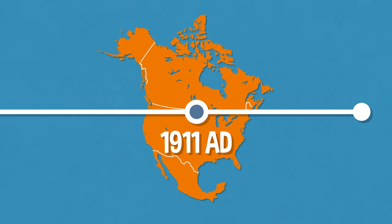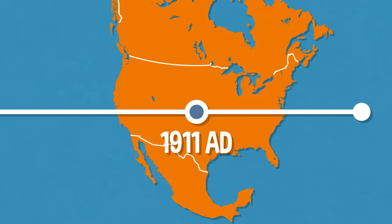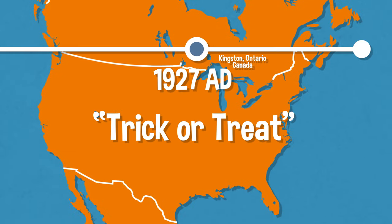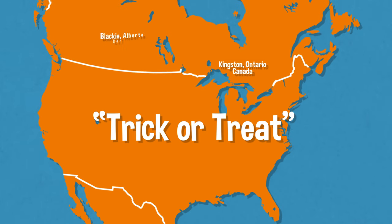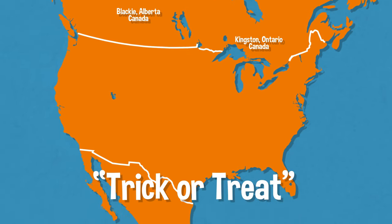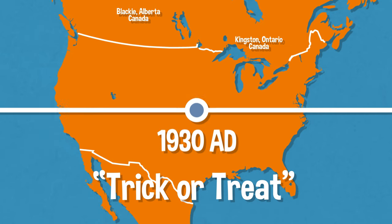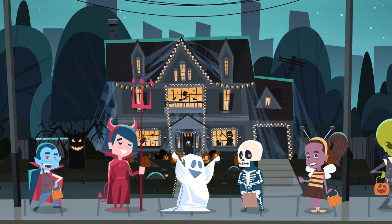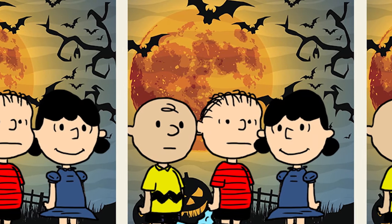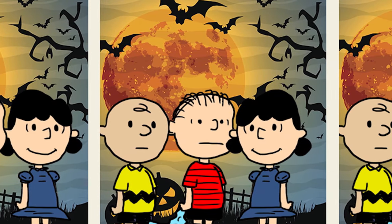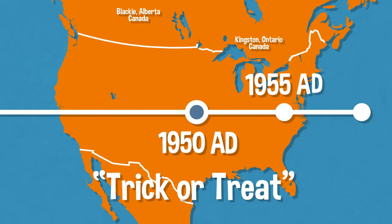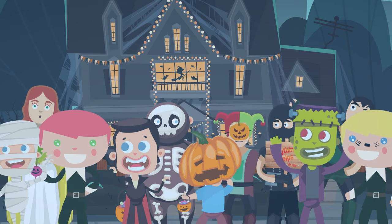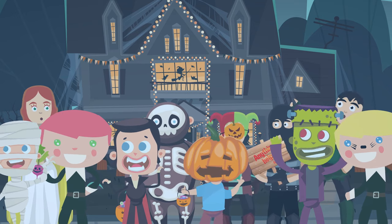The first reports of guising in North America wasn't until 1911 in Ontario, Canada. The term trick-or-treat was first used in 1927 by a newspaper in Alberta. Trick-or-treating first spread to the United States around the 1930s, and by the 1950s it was a national tradition — partly thanks to a famous Peanuts comic strip from 1951 that showed Charlie Brown out trick-or-treating. By the mid-50s, trick-or-treating was firmly settled as an important part of the American Halloween tradition. Now, go eat some candy!